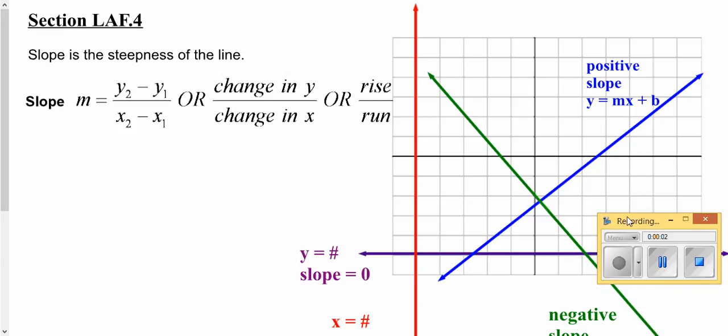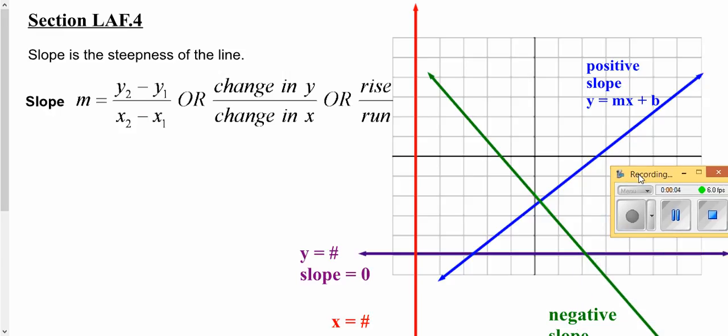We're going to take a look at graphing lines and finding the equations of those lines. Now we're going to review what slope is. Slope is basically the steepness of the line, how fast it goes up or how fast it goes down or how slow it goes up or down.